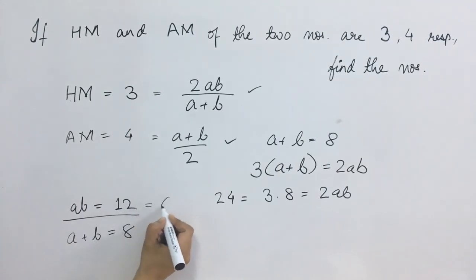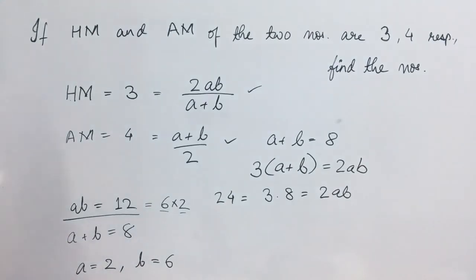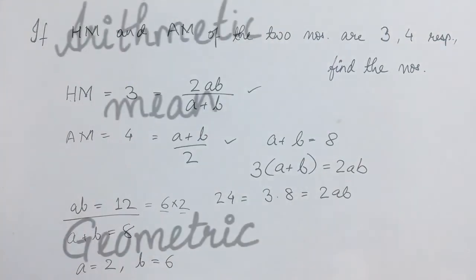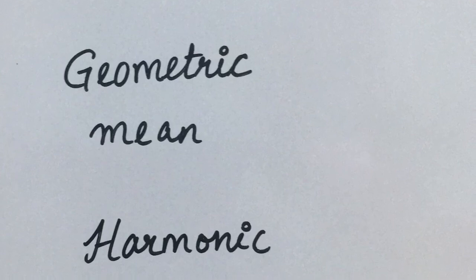So AB value is 12 and A plus B is equal to 8. 12 can be written as 6 into 2 is 12, and 6 plus 2 is 8. Therefore what we got here is, one number will be 6 and the other number will be 2. So we can say that A is 2 and B is 6. We can check it also. When we put these two values in HM, the answer will be 3. And when we are going to substitute this in AM, the answer is going to be 4. So the 2 numbers that were asked in the question are 2 and 6.